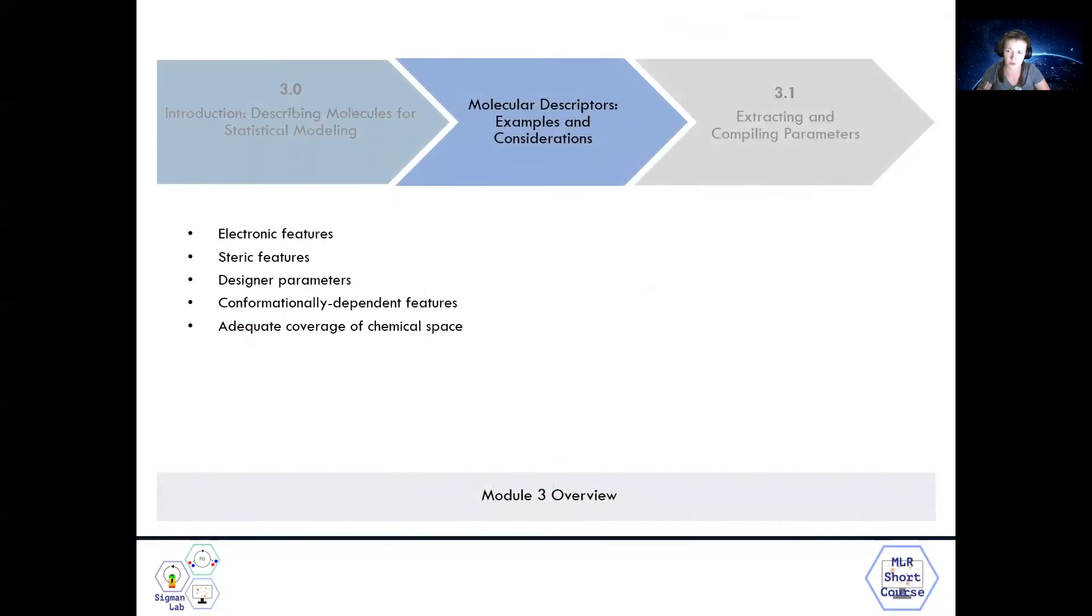So next, we'll run through a brief and certainly not all-encompassing overview of some commonly used molecular descriptors. We'll start with electronic features, followed by steric features, and then move on to an example of a designer parameter. Finally, I'll make a note on conformationally dependent features and the importance of covering chemical space.